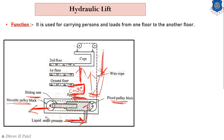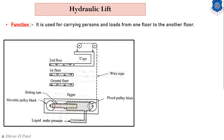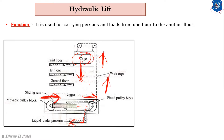Exactly opposite to that, suppose our cage is at the second floor and we want to move to the ground floor. Then we remove some amount of higher pressure fluid. Our movable pulley moves in the right-hand side direction, applying a compression force to the wire rope. The wire rope moves upward, and the cage moves in the downward direction. So you can get and reduce elevation with the use of higher pressure liquid supplied at the bottom level of the movable pulley.